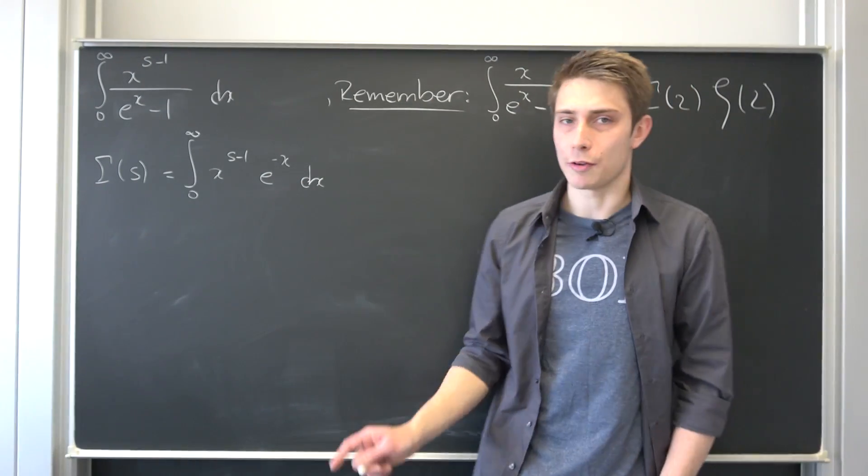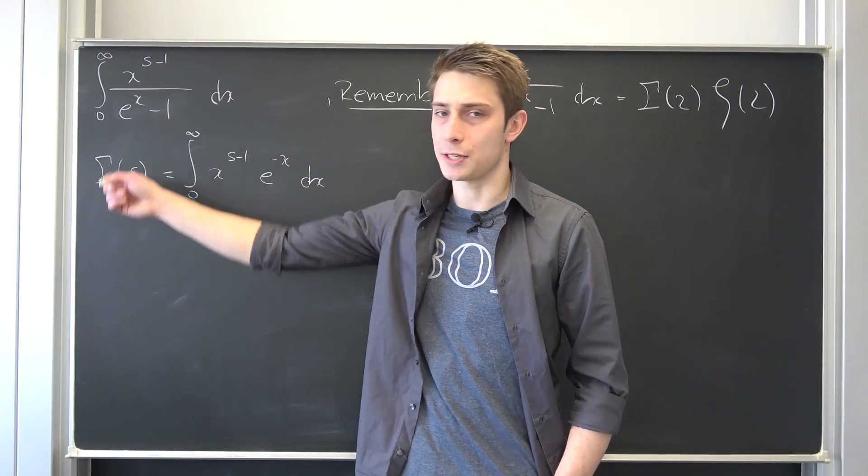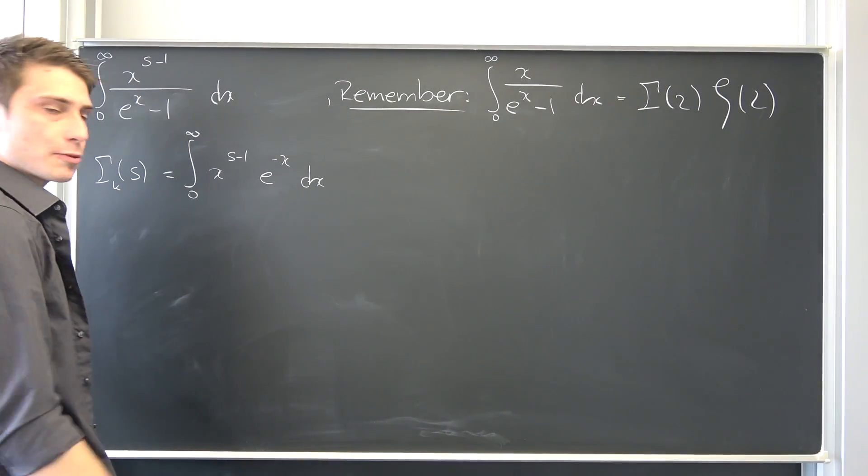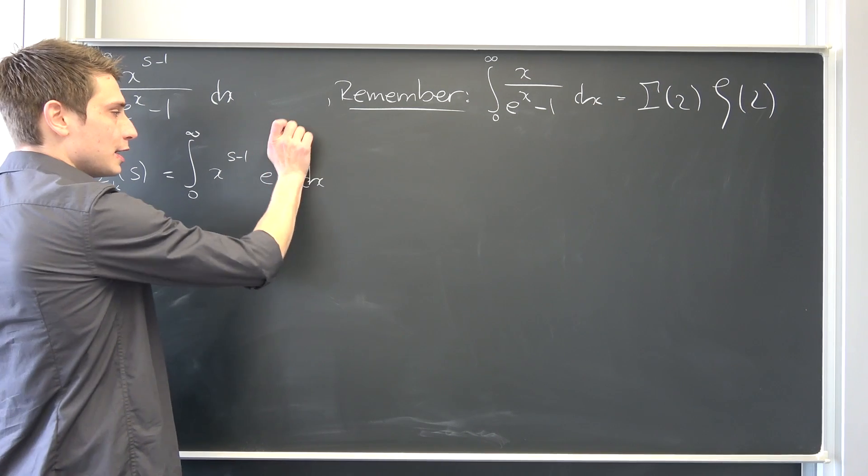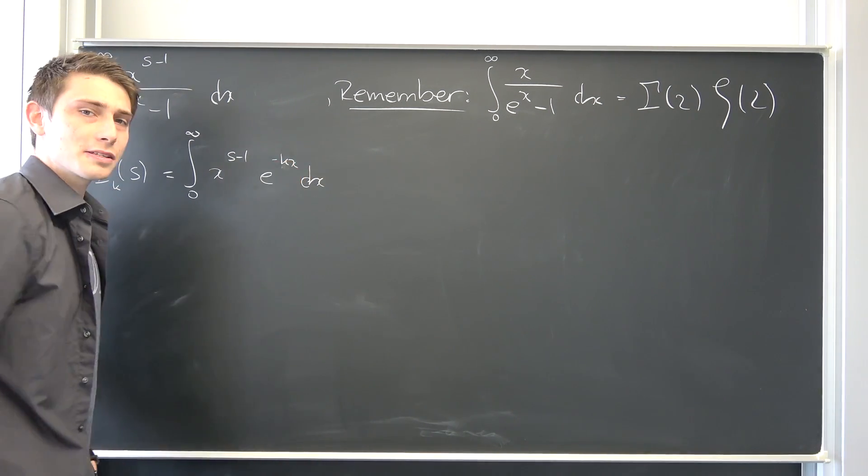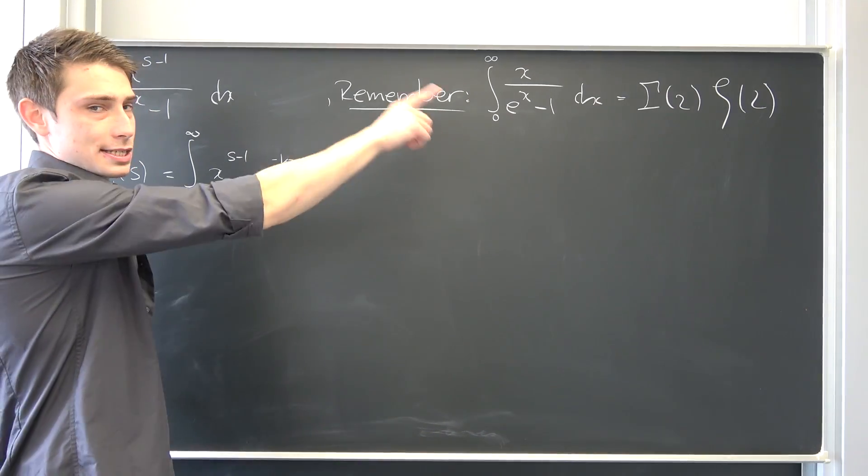But before we can go any further, I would like to parameterize this gamma function right here. Let's put a little index k down here. And let's say we don't have this expression, but we have e to the negative k times x right here. This is going to help us get our zeta function.